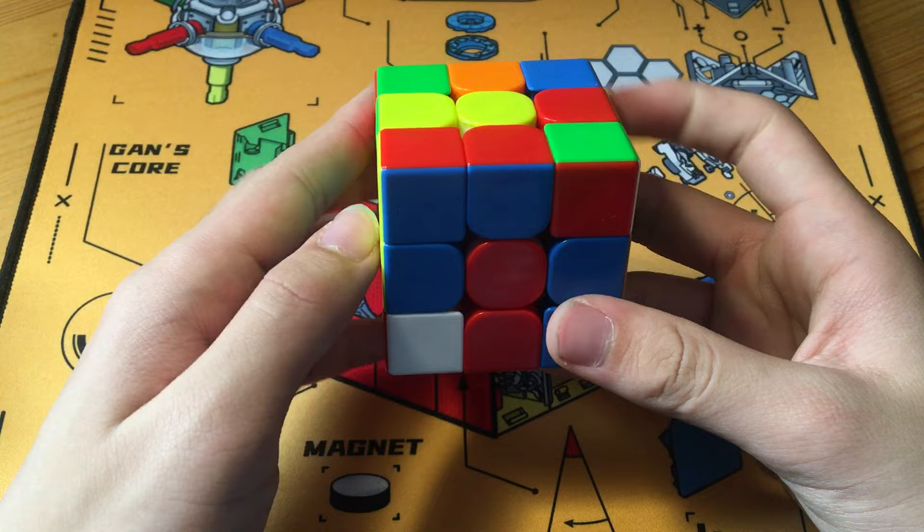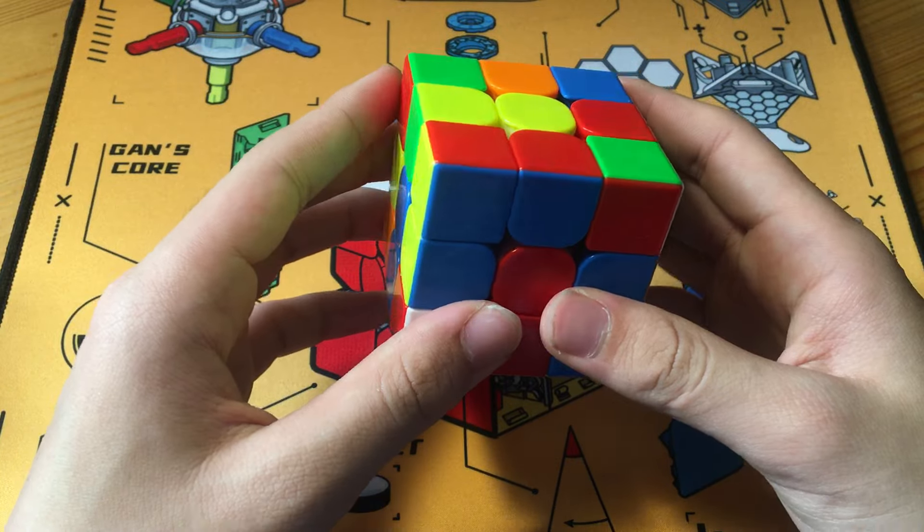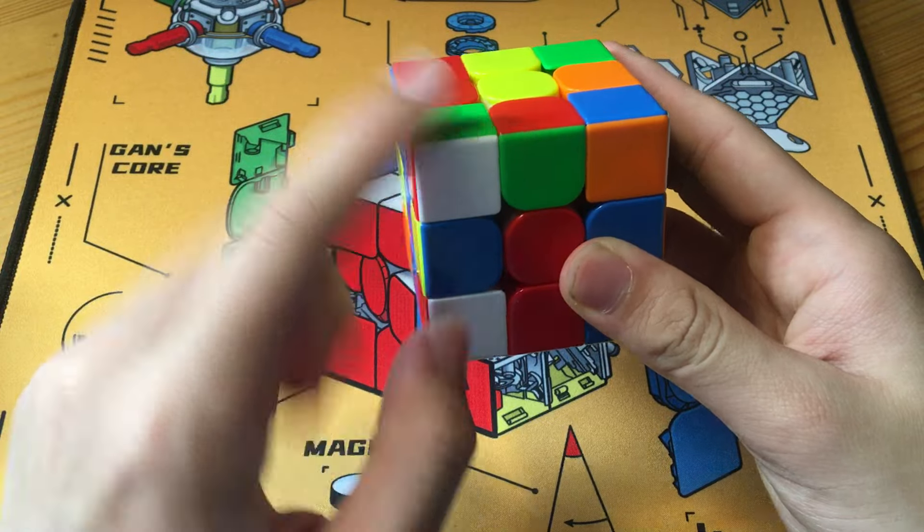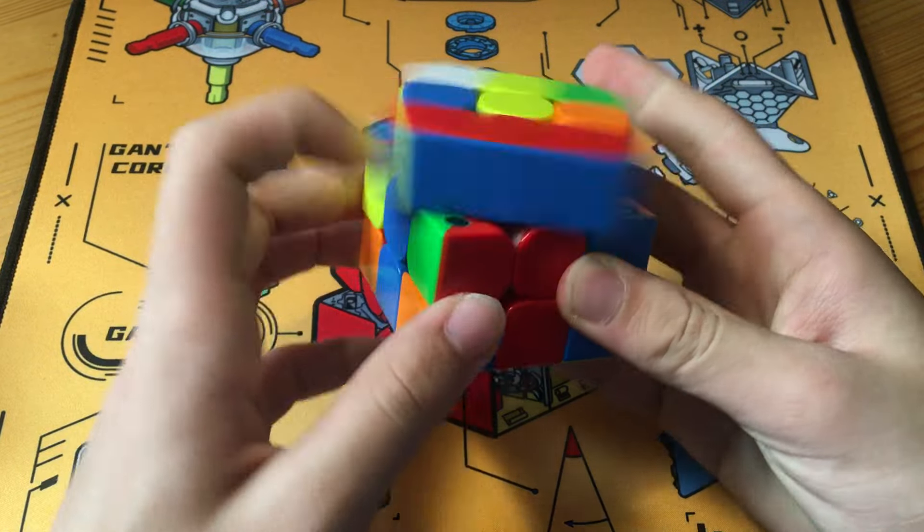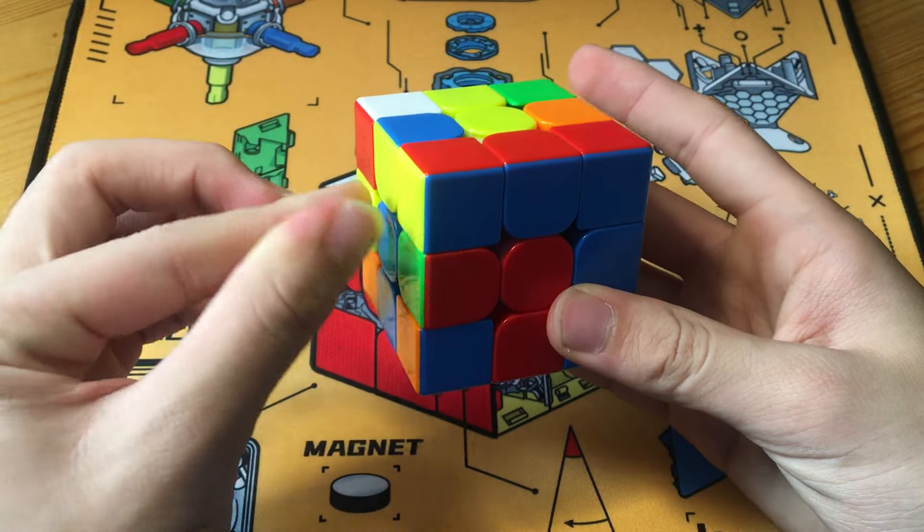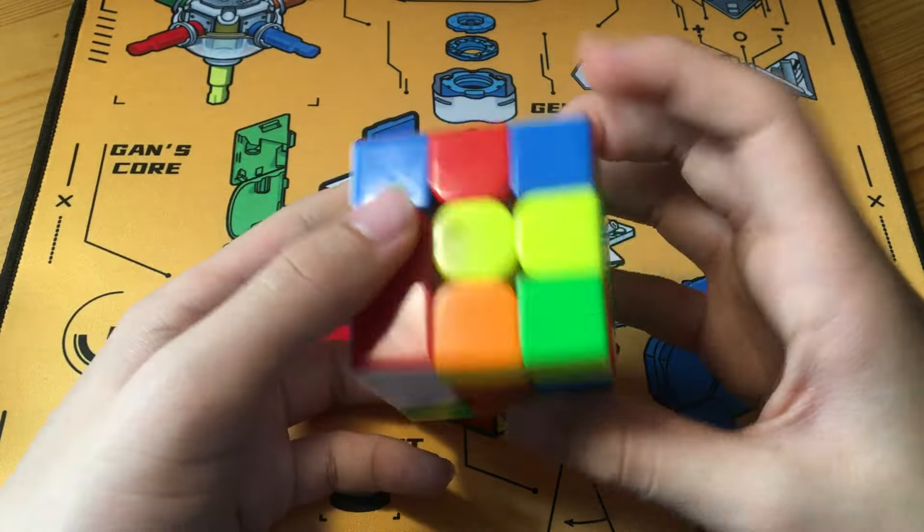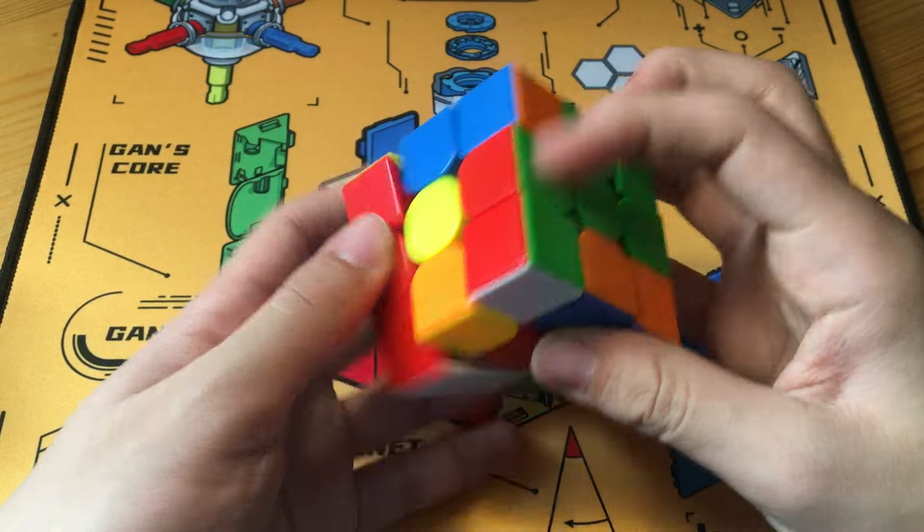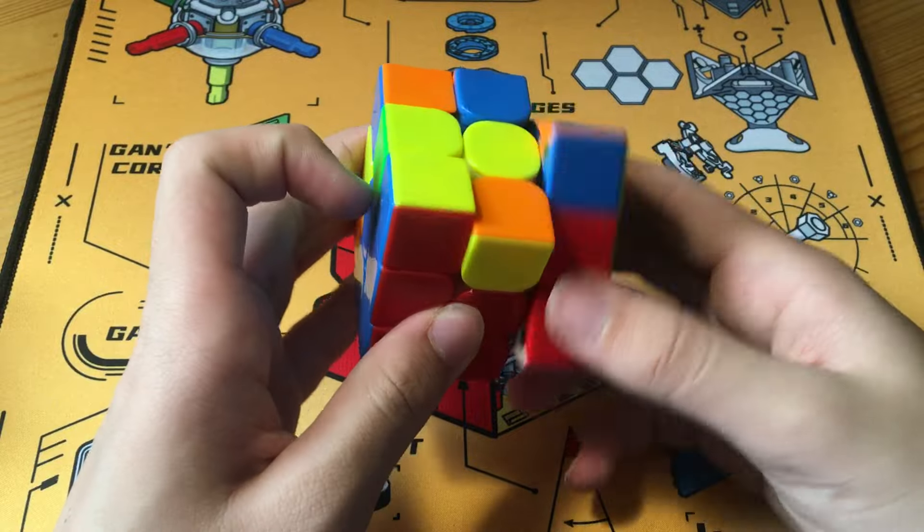And here, Kyle does a rotation to solve these two. And here, he also notices this pair at the front. And so, instead of doing something like this, which would leave a very bad third pair, he does U2, L'U2L, to pair these two up, and to solve in the front.